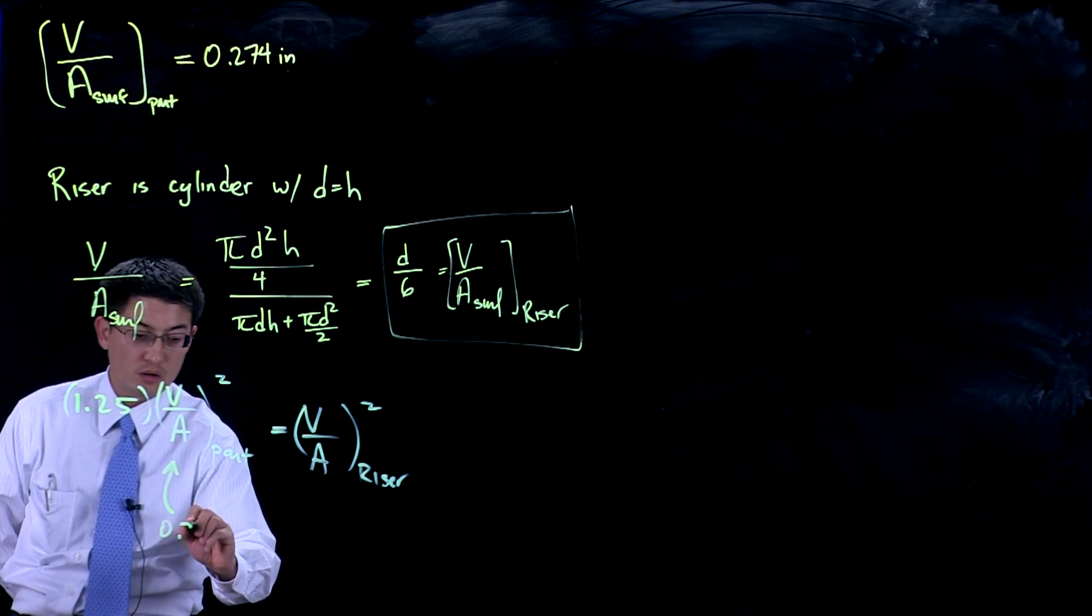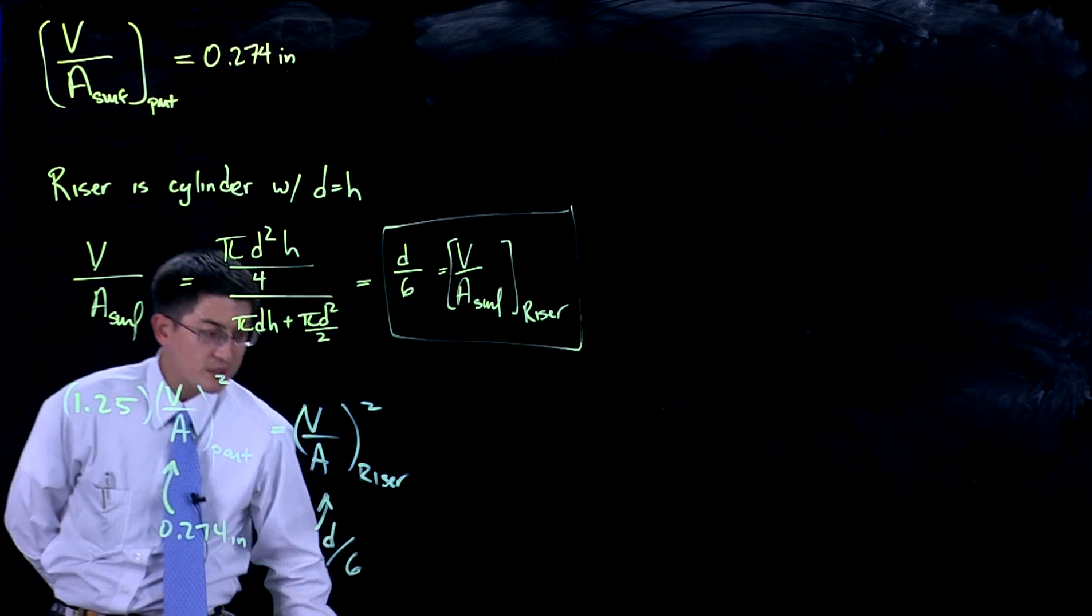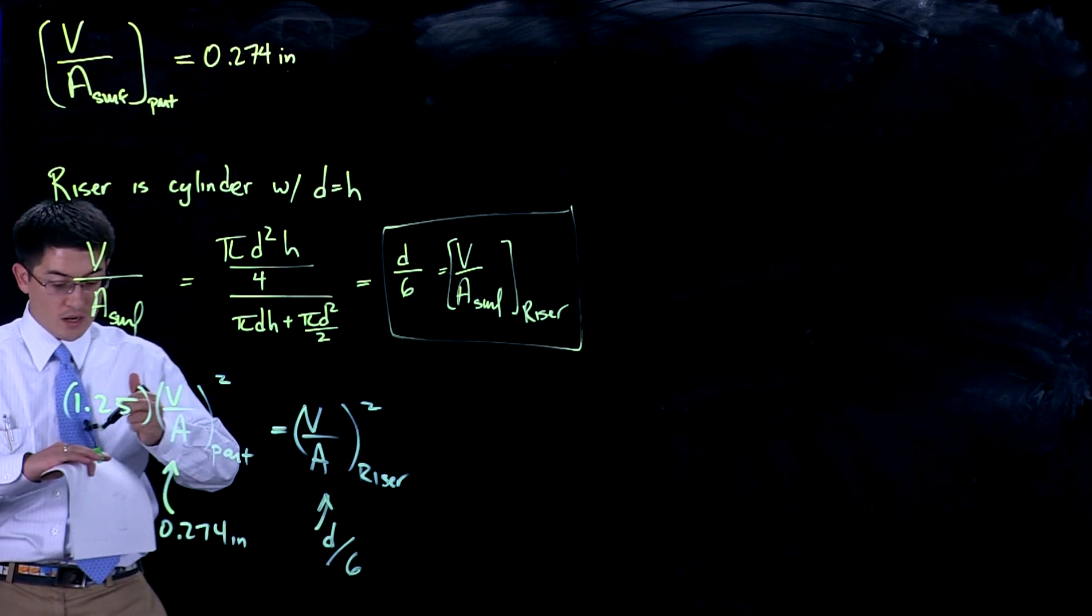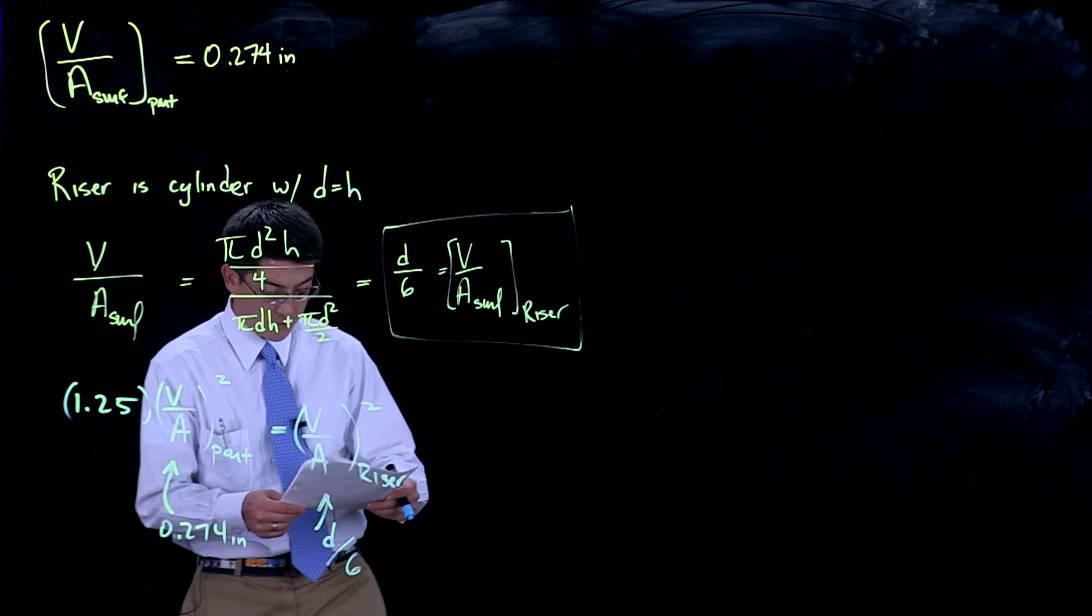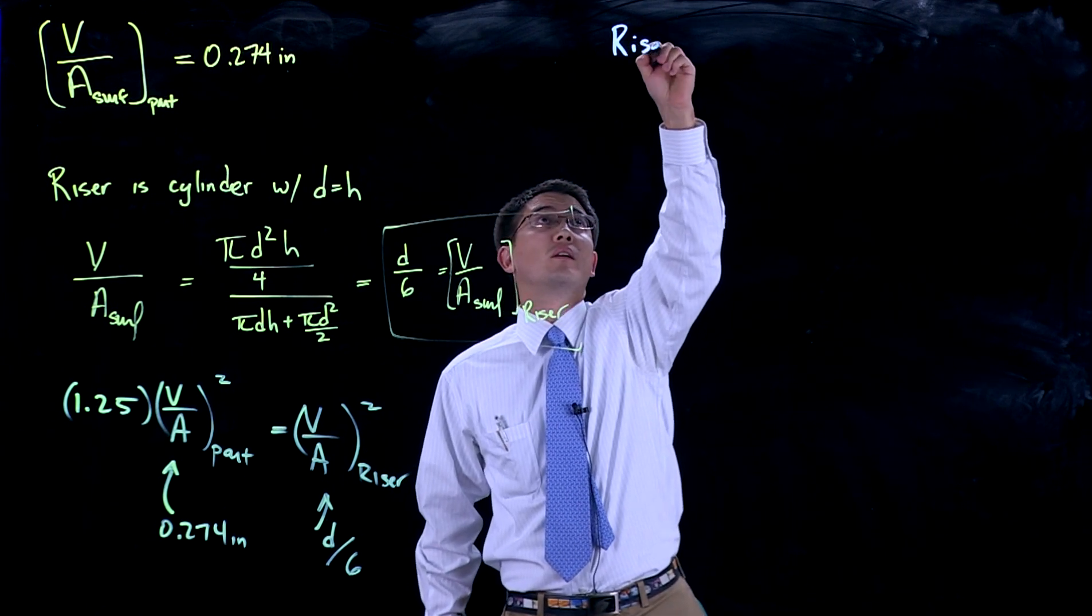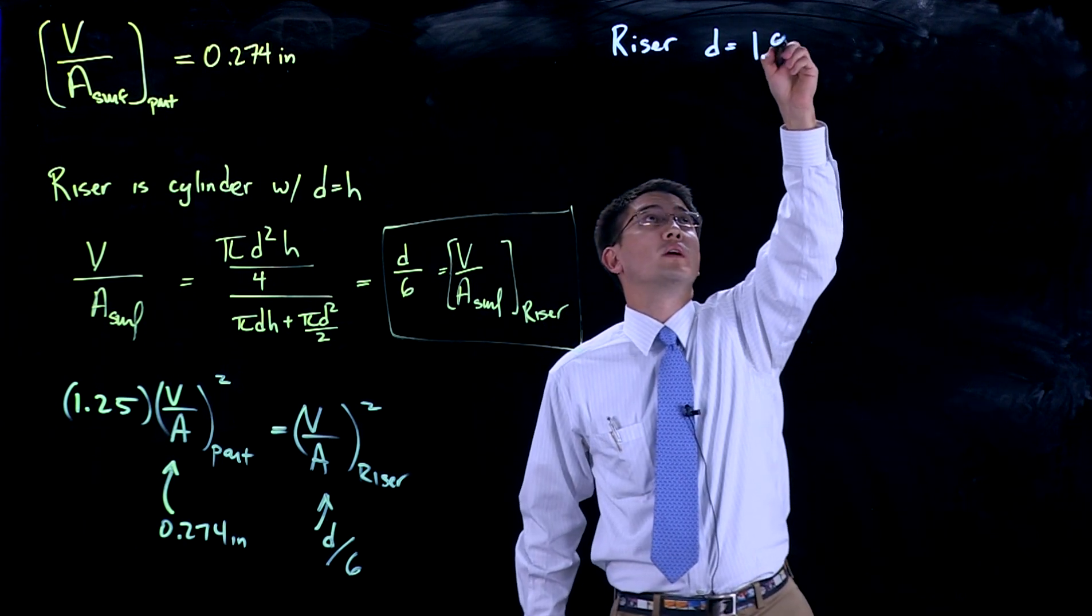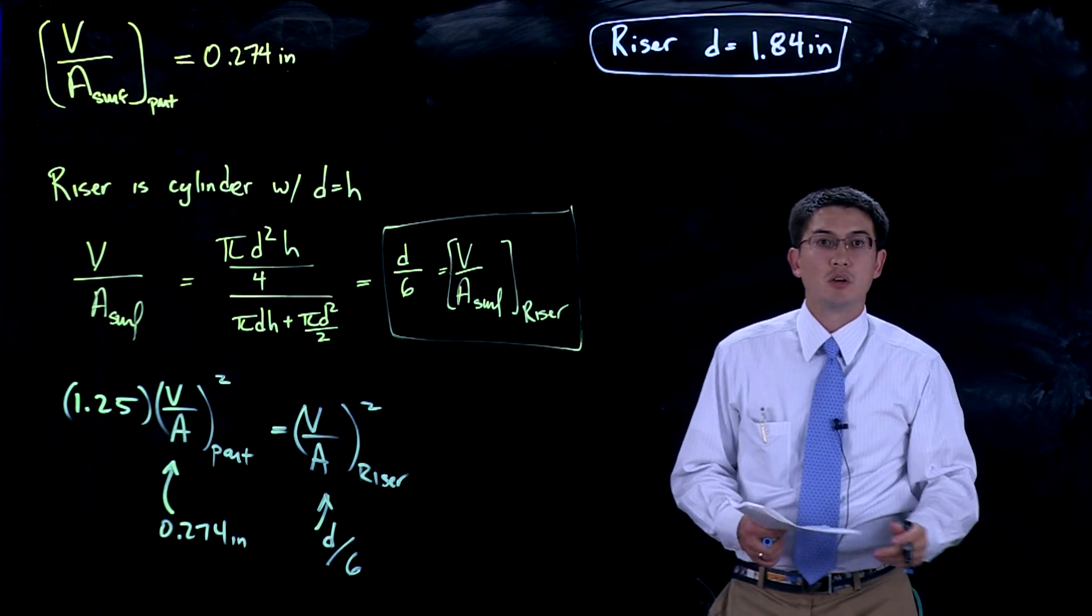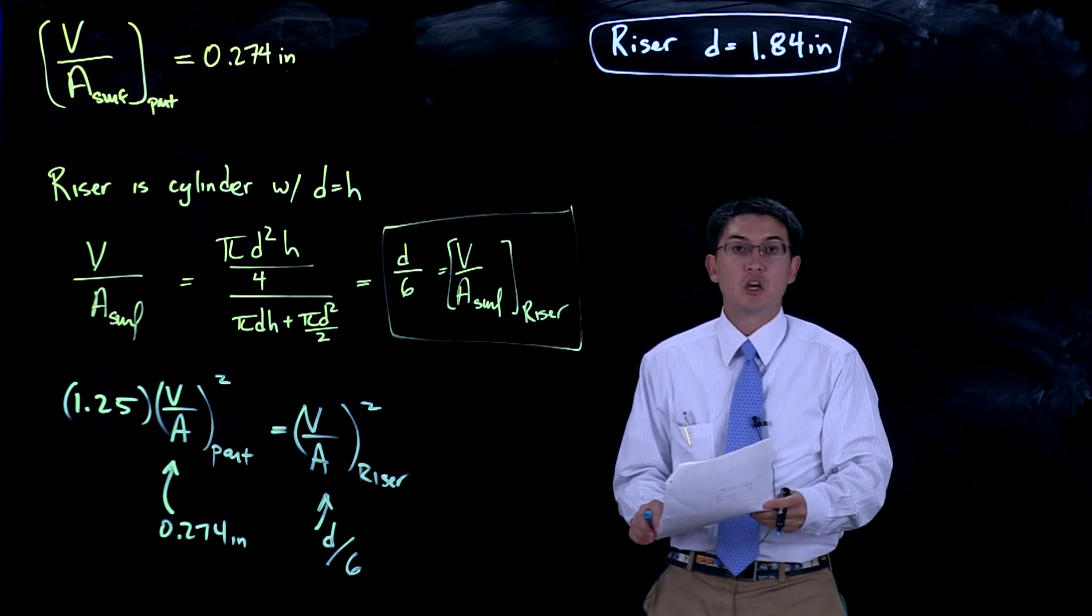If we rearrange, we can find that for our riser we should use a diameter of 1.84 inch or larger, but 1.84 inch should be our minimum.